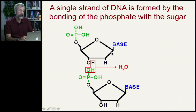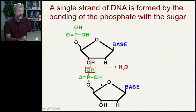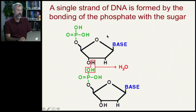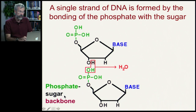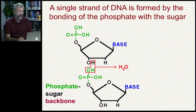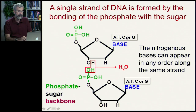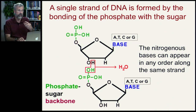When we have a strand of DNA, that's a series of nucleotides held together by the bonding of the phosphate with the sugar. A nucleotide connects to an adjacent nucleotide so that the phosphate gives off a molecule of water. So you have a sequence of bases going along the strand — a phosphate-sugar backbone — and these nitrogenous bases can appear in any order along the strand. Adjacent positions could be A, T, C, or G in any combination.